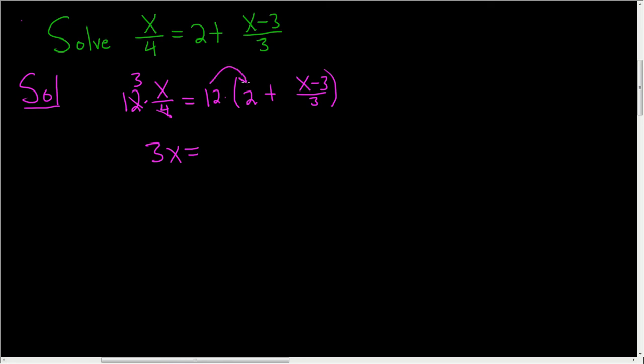So 12 times 2 is 24. And then we multiply the 12 by all of this. So 3 goes into 12 four times, so we're left with plus 4 times x minus 3.